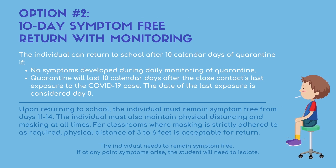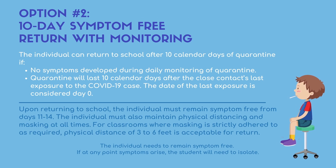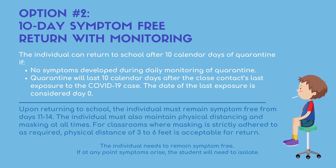Option two: a 10-day quarantine with a return on day 11 if the child has been and remains symptom-free. If you choose this option, your child will quarantine for at least 10 days and will be able to return on day 11 if they are experiencing no COVID-19 symptoms during the quarantine. Once returning to school, the child must remain symptom-free through day 14. The individual must also maintain physical distancing and masking at all times. For classrooms where masking is strictly adhered to as required, a physical distance of three to six feet is acceptable for return.